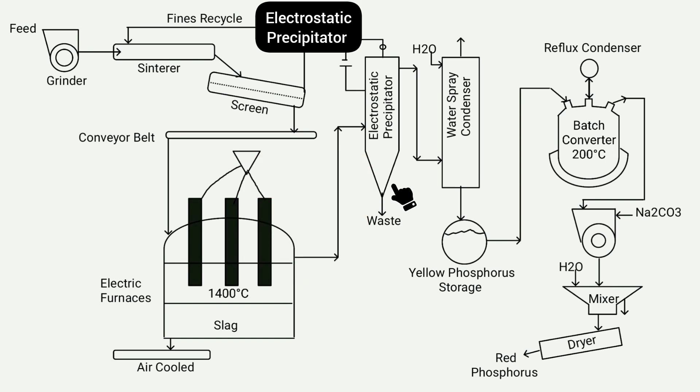The device known as an electrostatic precipitator operates by generating electrostatic forces to remove dust particles from gases. In this process, dust particles are effectively removed from the gases through the use of an electrostatic precipitator.